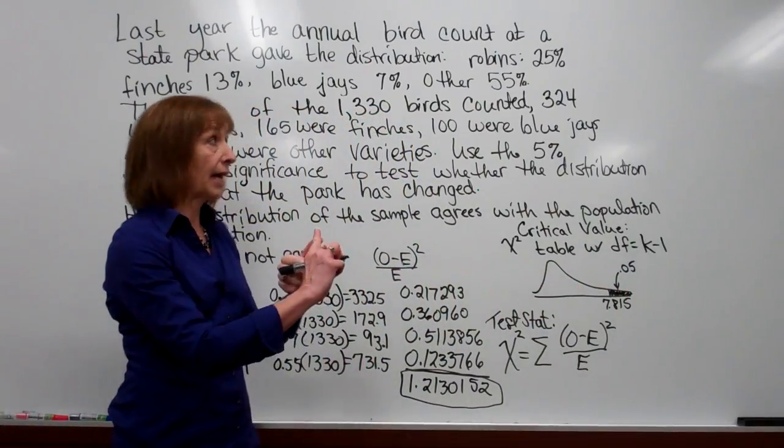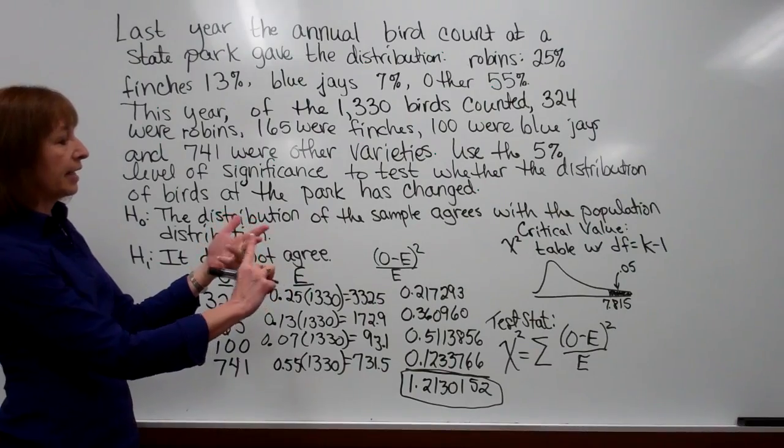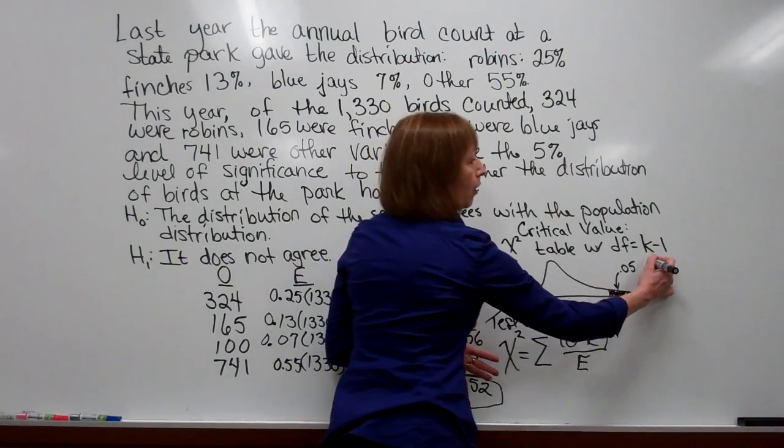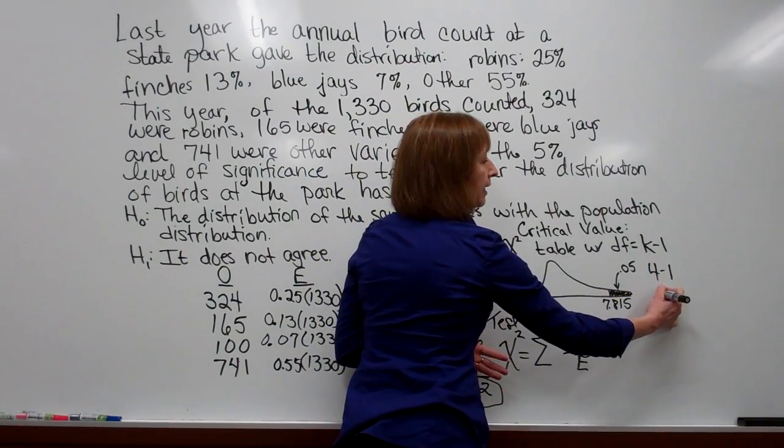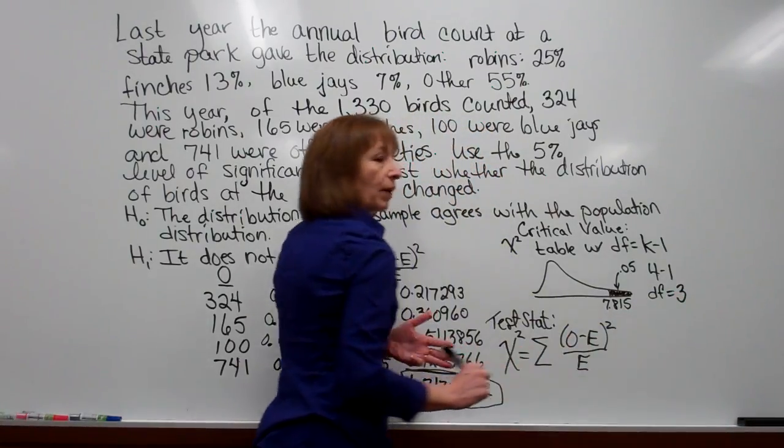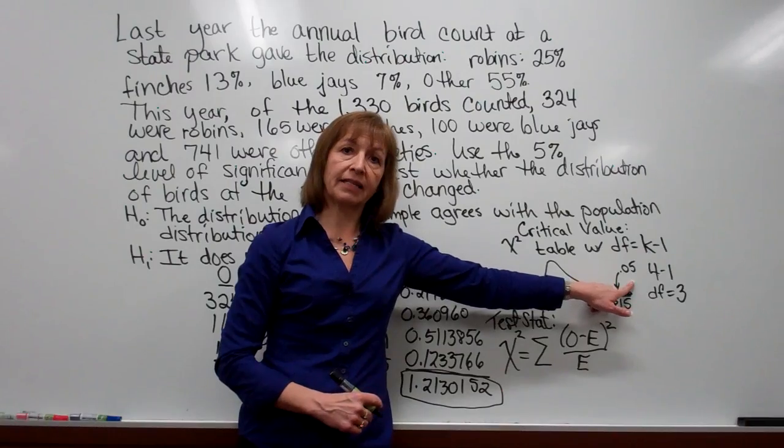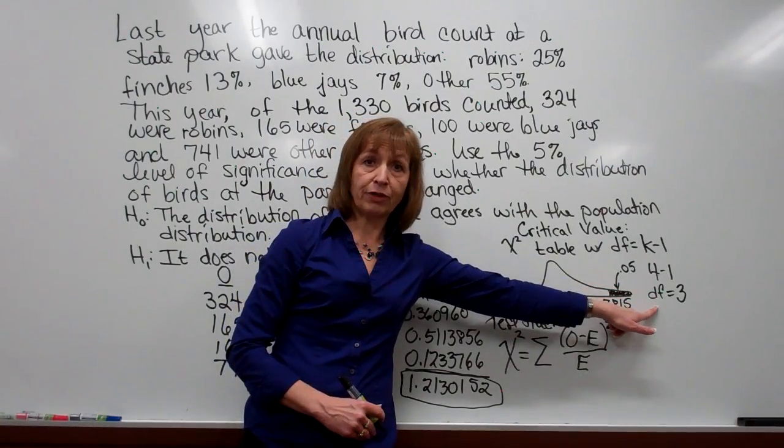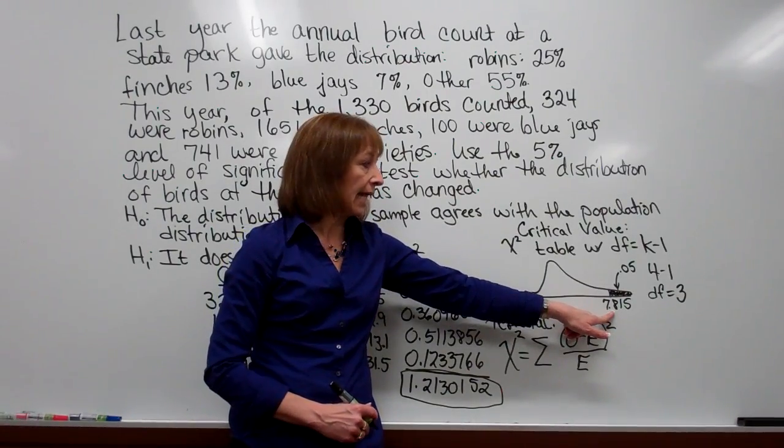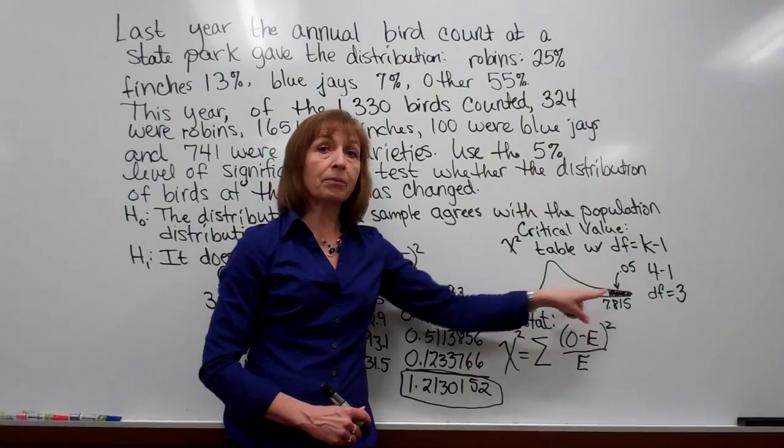In this problem we had robins, we had finches, we had blue jays, and we had other. So we had four categories, so 4 minus 1 gave me a degrees of freedom equal to 3. So when you looked at the chi squared chart with the level of significance being 0.05 and the degrees of freedom being 3, you should see on there a critical value of 7.815. Now remember if you compare your test statistic with your critical value, you're working along a number line.